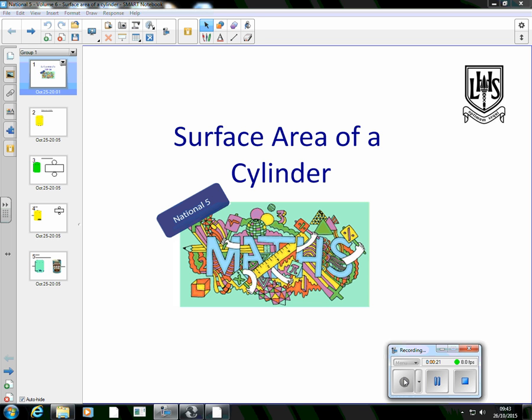Now you've worked with surface area before. In National 4 you've looked at surface area of cuboids, maybe some triangular prisms as well. The cuboid one was where we had to find the area of the front and the back and the sides and the top and the bottom and add them all together.